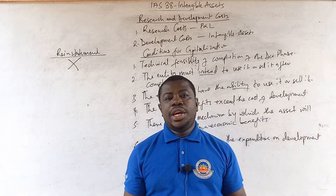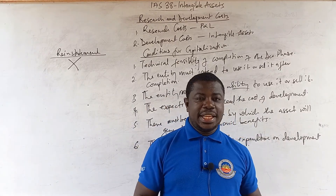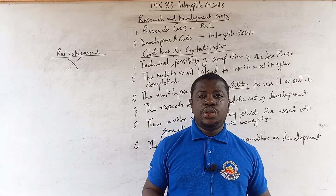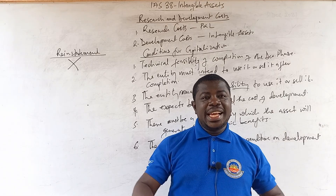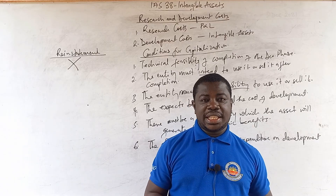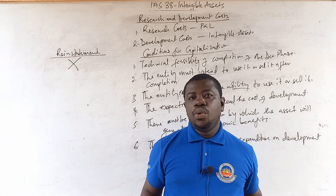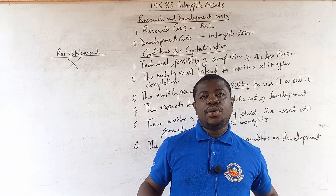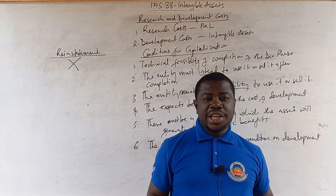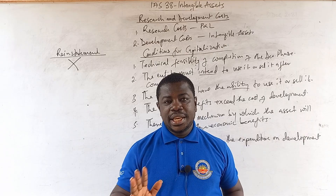This brings us to the end of part three of our video on IAS 38. There will be a part four and possibly a part five. In part four we are going to talk about goodwill as an intangible asset, going deep to exhaust everything you need to understand about goodwill, and then from there we'll look at other remaining areas and solve questions that cut across all areas. Remember to subscribe to this channel if this is your first time, share this video, and until we meet again for part four, bye for now.